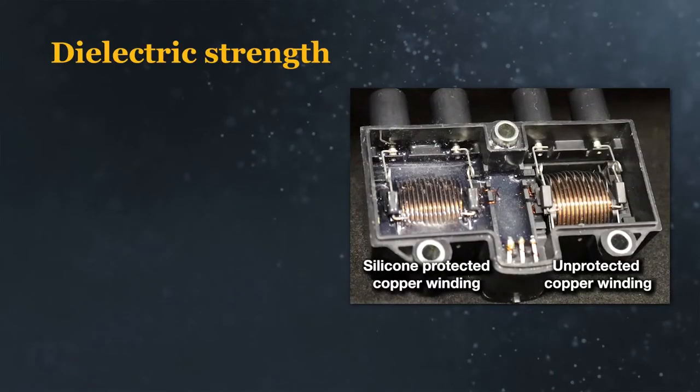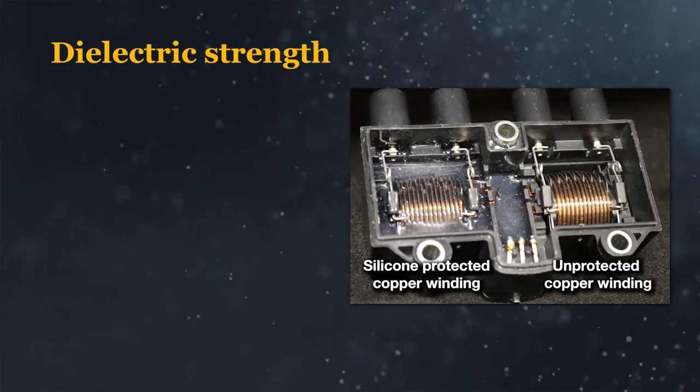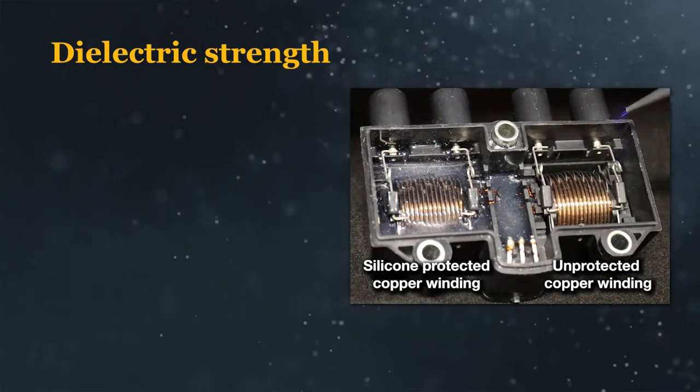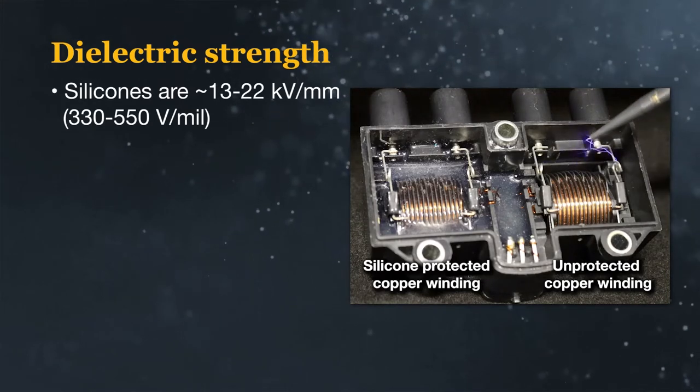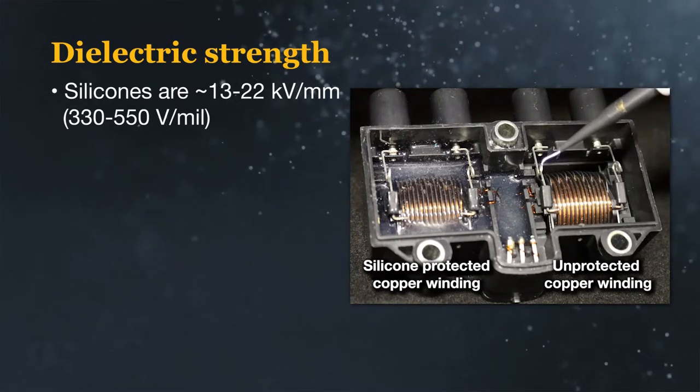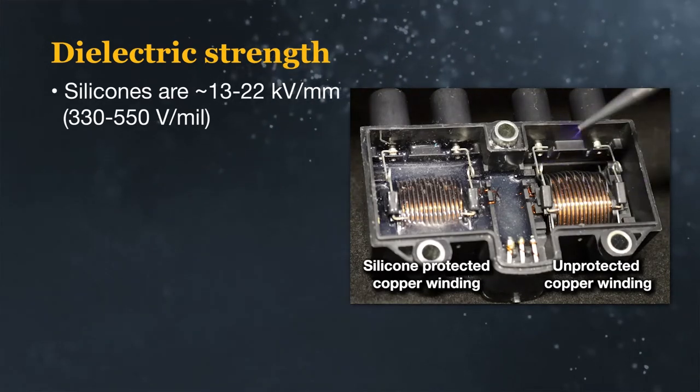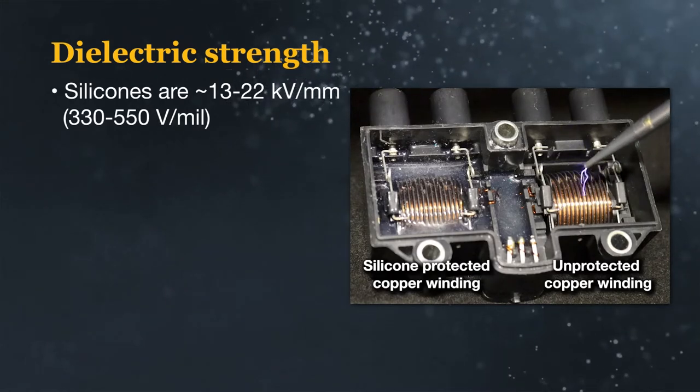Dielectric strength determines how thick an insulator should be between potential arc sources. Typical silicone values are from 13 to 22 kilovolts per millimeter, or 330 to 550 volts per mil, or thousandths of an inch.